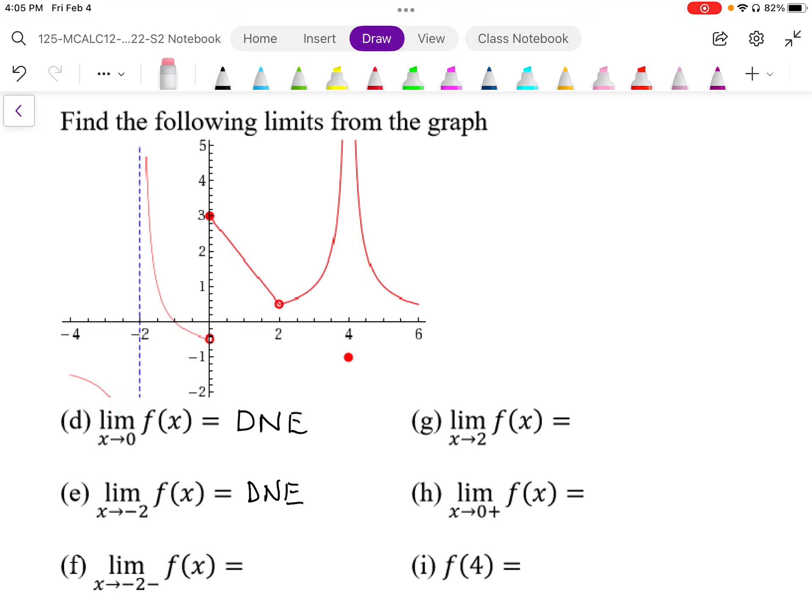For f, we're approaching negative 2 now just from the negative side. So we're only approaching it from this side. Well that's going towards negative infinity, so that does exist. So we can say that the limit is negative infinity.